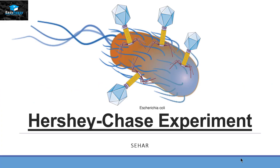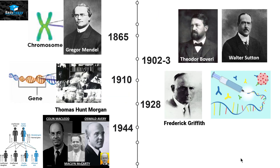Hello, this is Seher from Easy Peasy. The topic we are going to discuss today is called the Hershey and Chase experiment. If we look at the timeline of genetics, we can see that in 1944 three scientists named